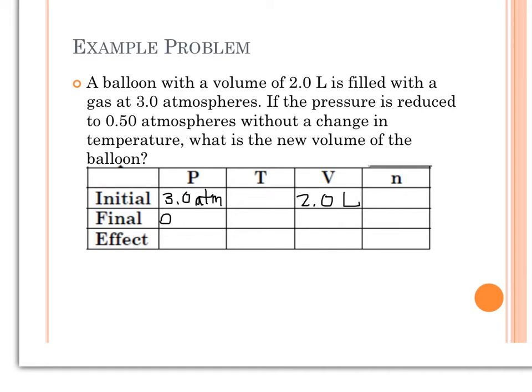So that's going to be 0.50 as my final pressure, without a change in temperature. So I'm going to just put a slash to my temperature to represent that the temperature is not changing. And we want to know what is the new volume of the balloon. There's no mention of number of particles either, so I'm going to assume that those will stay the same.